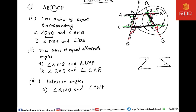The second pair of interior angles is angle BXS and angle DZR. The sum of these interior angle pairs must always equal 180°.